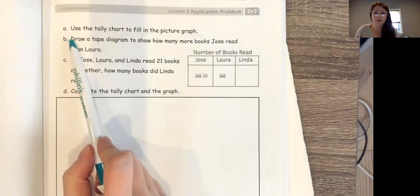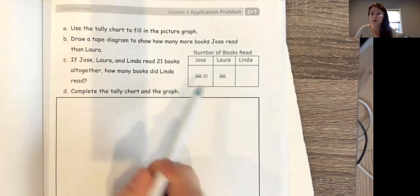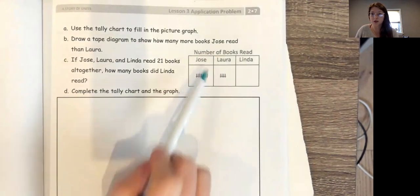So what we're gonna do is we're gonna read it and then we're gonna get started with drawing and solving. The first thing we're gonna do is use the tally chart to fill in our picture graph. So I'm gonna use the information from my tally chart here. These are my tallies in my chart. I'm gonna use that information to fill in my graph here.